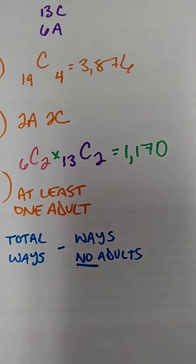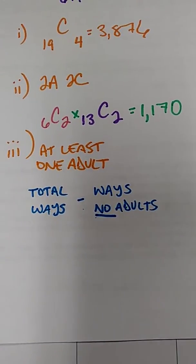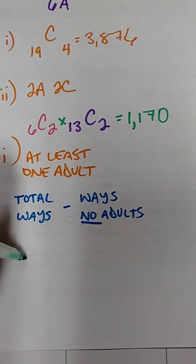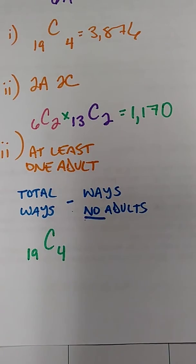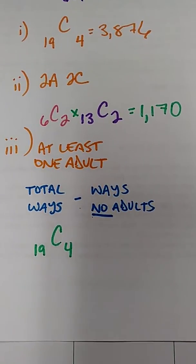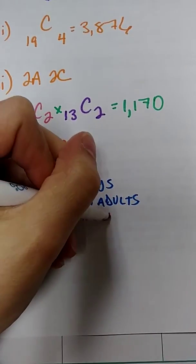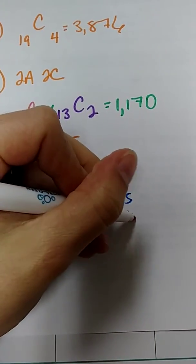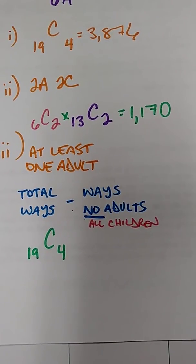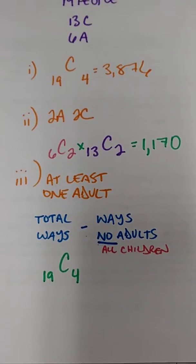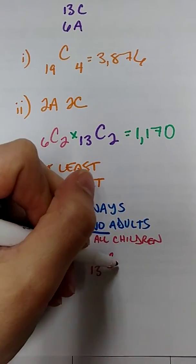So the total ways that we can solve this with no restrictions is going to come from the first part we did up here. The total ways we can pick any four people. We have 19 people to choose from. We need to choose four of them. That's it. Now we have to calculate the ways that we can have no adults. And we have no adults if we have all children. So the number of ways we can choose all children. We're choosing four people. They're all children. We have 13 children to choose from. And we're choosing four of them. 13C4.